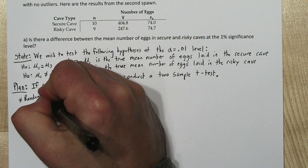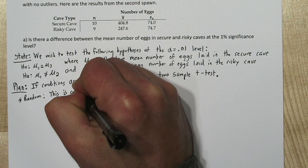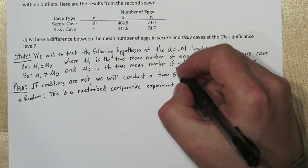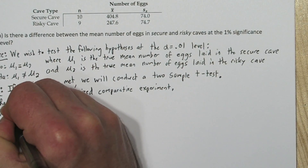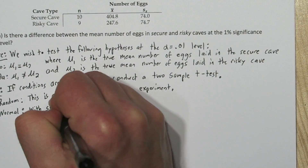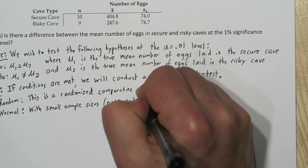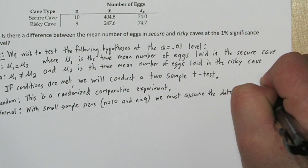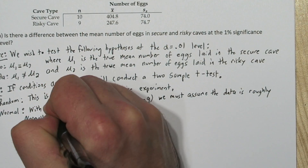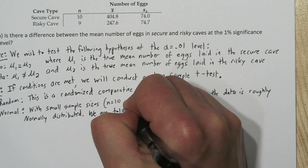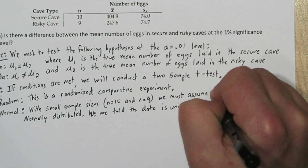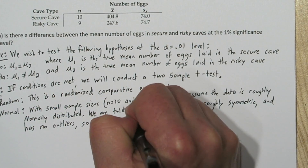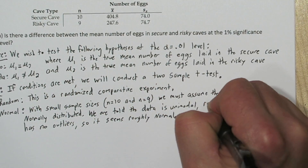For the random condition, since the treatments were randomly assigned, this was a randomized comparative experiment, so the random condition is met. For the normal condition, we have really small sample sizes — 10 and 9 — so we have to assume the data is roughly normally distributed. In the stem of the problem, we're told the data is roughly symmetric, unimodal, and has no outliers. So that sounds like it's roughly normal, and it's safe to use t-procedures.